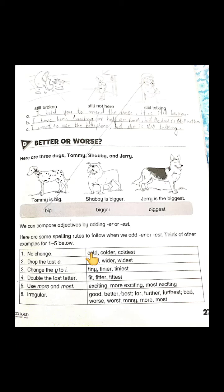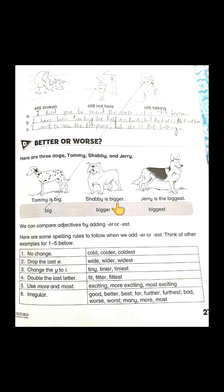Students, see this activity on page number 27 — Better or worse? Here are three dogs: Tommy, Shabby, and Jerry. Tommy is big, Shabby is bigger, and Jerry is the biggest.